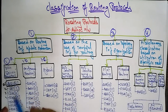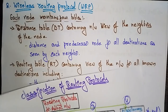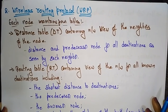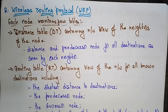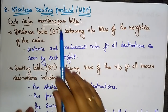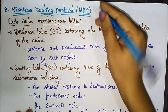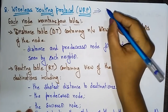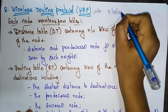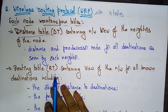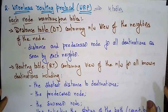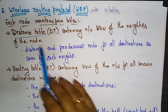WRP stands for Wireless Routing Protocol. In WRP, each node present in the network maintains four tables: the distance table, the routing table, the link cost table, and the message retransmission list — a total of four tables maintained by every node in the wireless routing network.